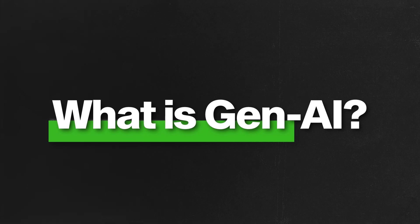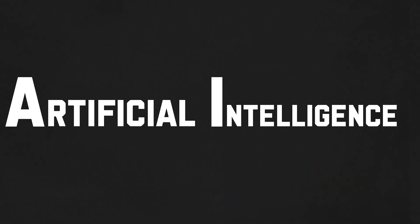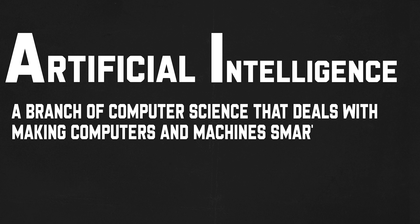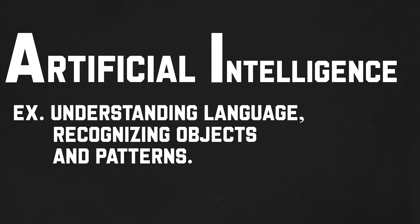The term is made up of two things: generative and AI. Generative refers to creating new content such as text, images, and videos. AI stands for artificial intelligence, which is a branch of computer science that deals with making computers and machines smart enough to behave like humans — for example, understanding language and recognizing objects and patterns. And when this AI starts generating new content, that is called generative AI.